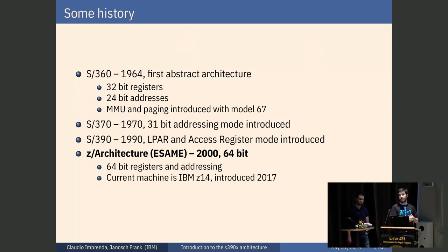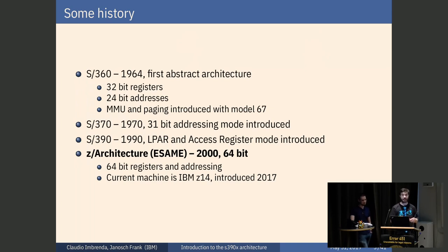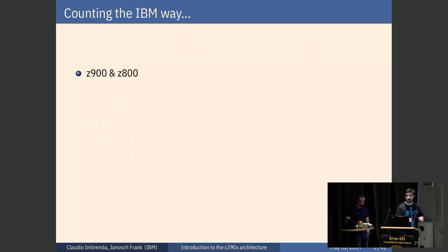In the 60s they decided 24 bits were not enough, so 31-bit addressing mode was introduced — yes, 31. In the 90s there were more extensions, power improvements, and the access register mode, which we will discuss. Finally in 2000 came the 64-bit version, also called Z architecture or IBM Z — the name changes every time there is a new machine. The current machine is the Z14, introduced in 2017.